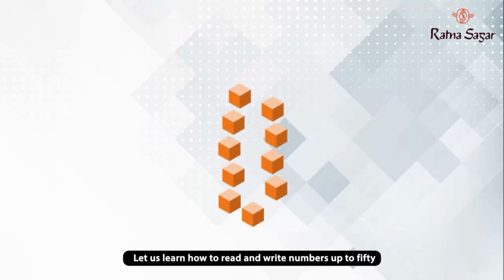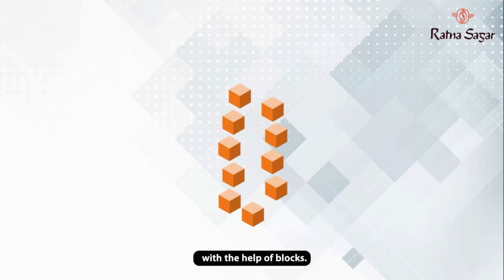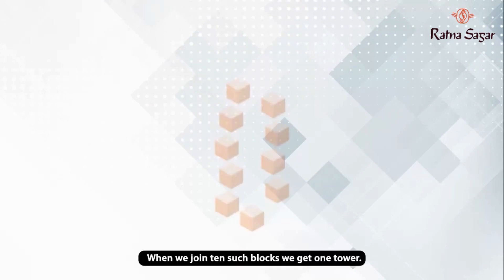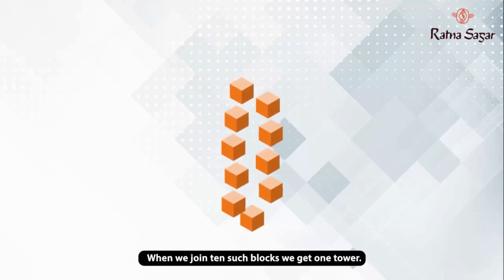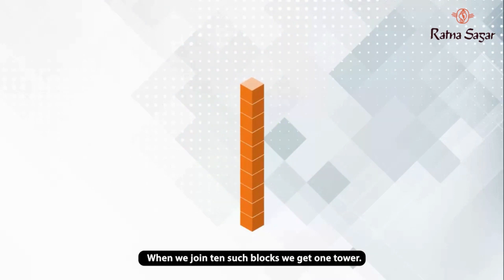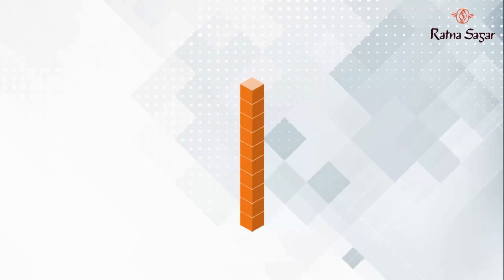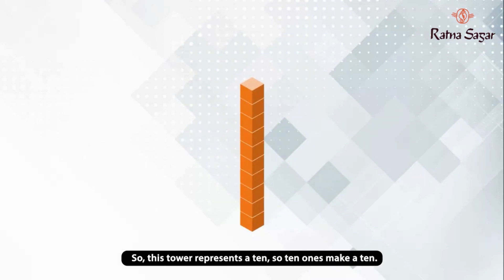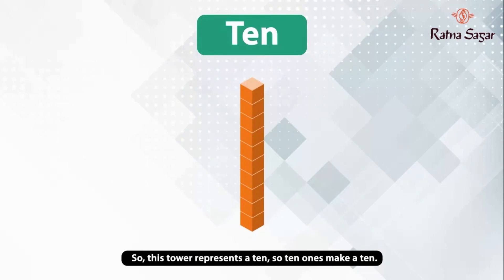Let us learn how to read and write numbers up to 50 with the help of blocks. When we join 10 such blocks, we get 1 tower. This tower represents a 10, so 10 ones make a 10.